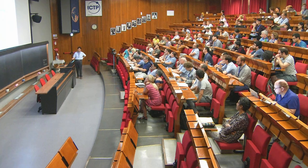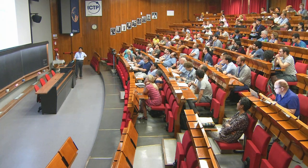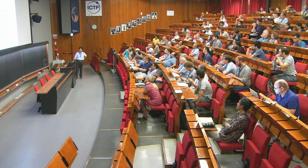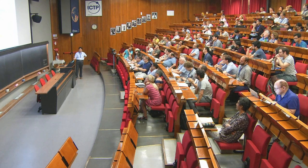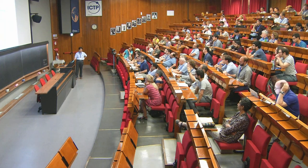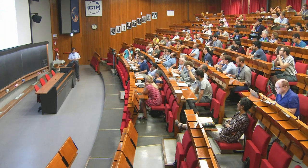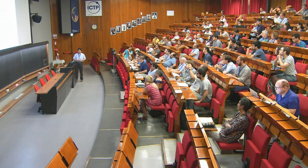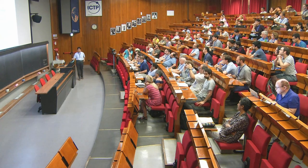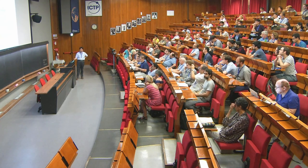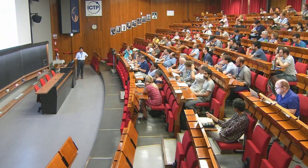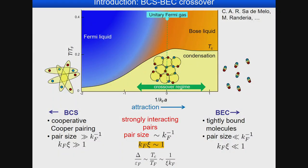The most interesting regime is the crossover regime, where you have strongly interacting pairs and the pair size is of the order of 1/K_F, so K_F·ξ is of order unity. An important parameter here is the ratio between the superconducting gap Δ and the Fermi energy E_F, which is of order 1/(ξ·K_F).